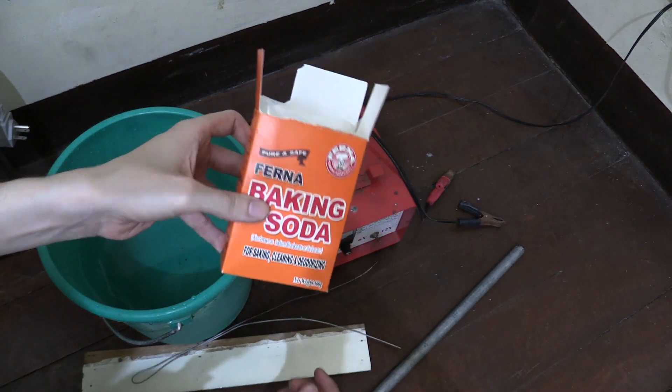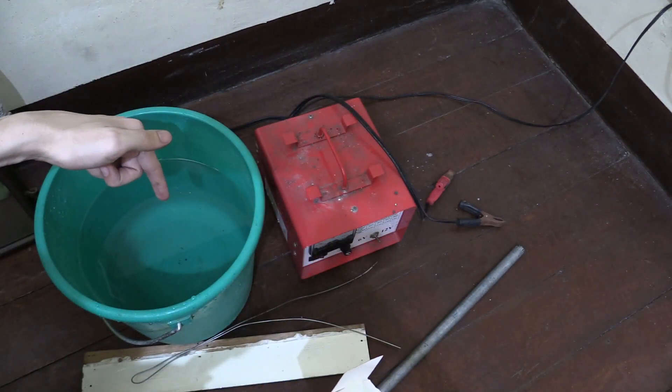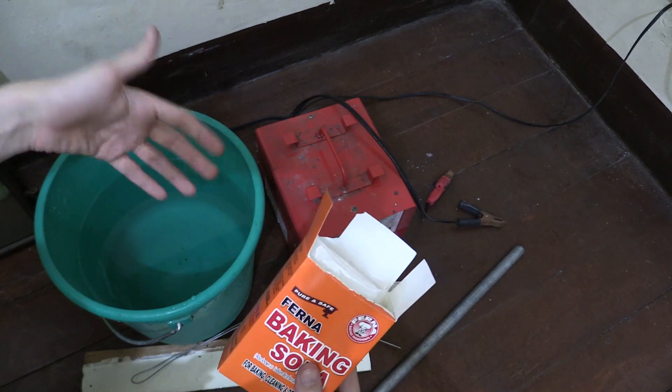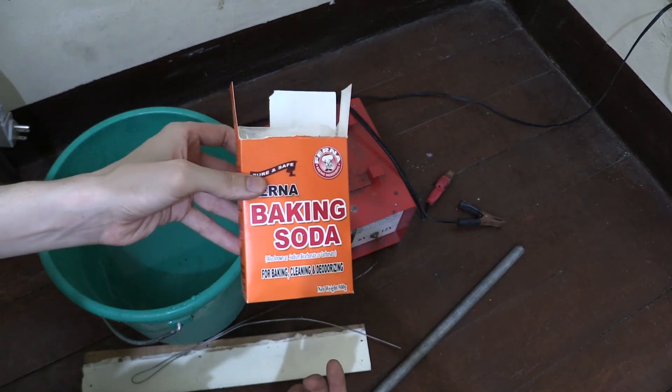We're going to use baking soda as an electrolyte to make the water more conductive. You can use washing soda - that would work better - but I only have baking soda.